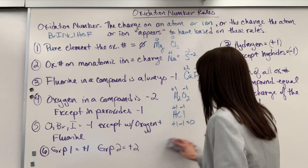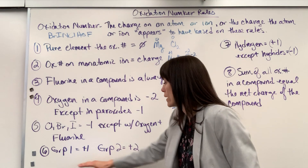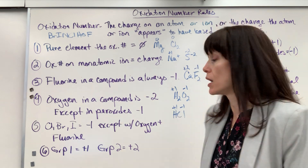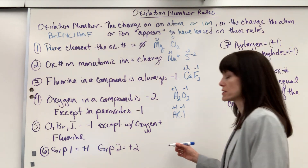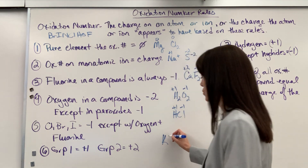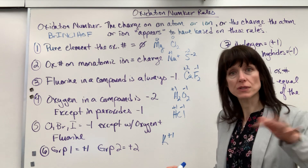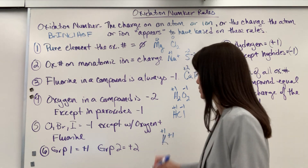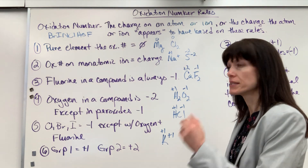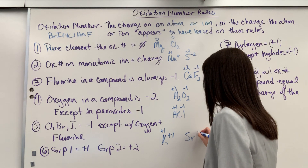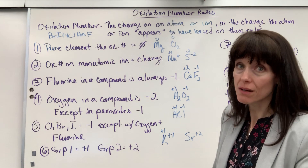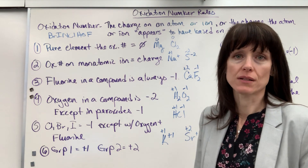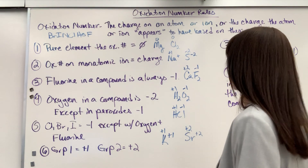Rule six is pretty easy: groups one and two have an oxidation number the same as their charge. Group one — take potassium: its charge is plus one, it loses one electron to have a full valence shell, so its oxidation number is plus one. Take strontium from group two: its charge is plus two, so its oxidation number is plus two. You can take that to the bank.